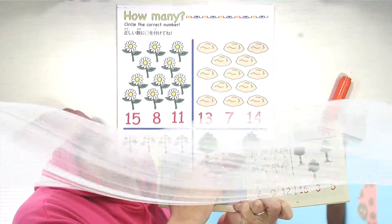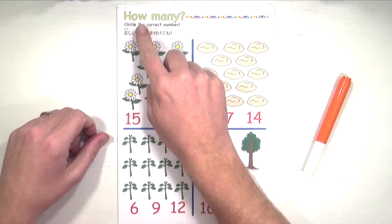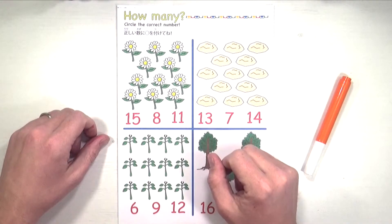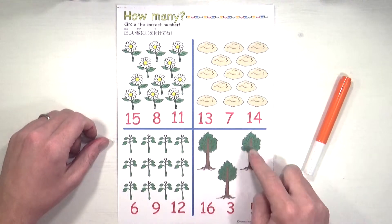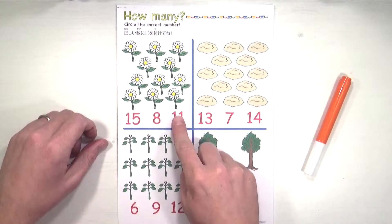How many? Circle the correct number. Alright, so we're going to count each of these things and circle the number that matches.